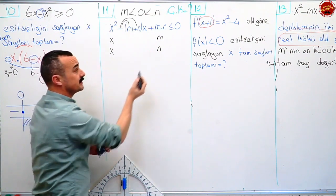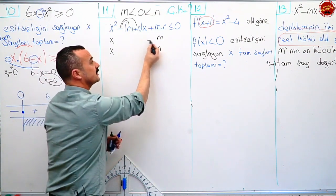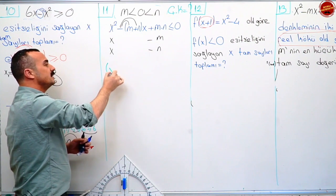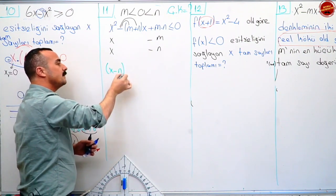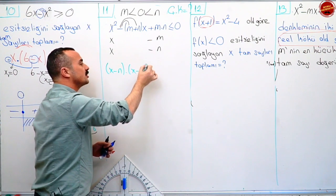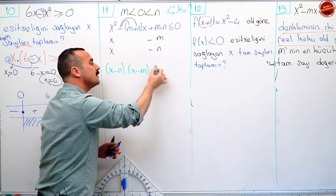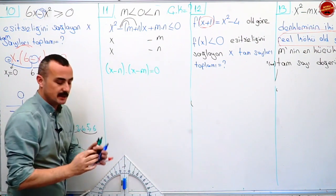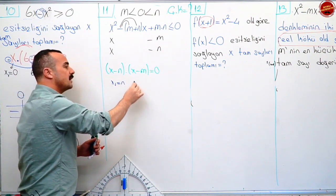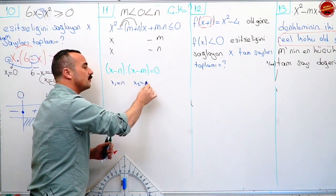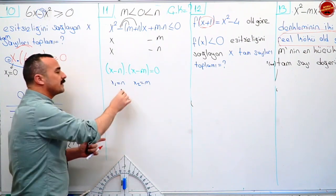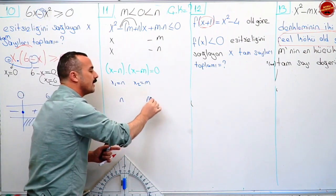İkisine de eksi koydum. O zaman burası x eksi n ile x eksi m'nin çarpımı oldu. Kökleri bulmak için sıfıra eşitledim. Birinci kök n, ikinci kök m oldu. Şimdi tablo yaparken hemen sıralıyorsun: n, m. Yanlış! Bu sorularda küçük kök solda, büyük kök sağda.